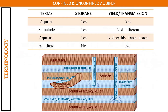Now we will see some terminologies. First is aquifer — a soil layer which stores as well as transmits the water. Second is aquiclude — it can store water but cannot sufficiently transmit the water.